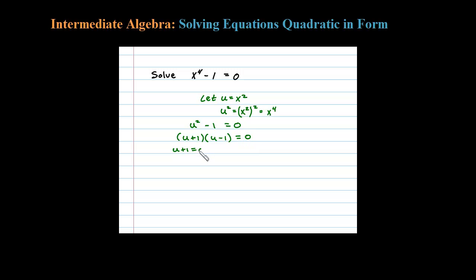Then set each factor equal to 0, and you can get solutions here - two solutions for u. But the solutions for u, that's not what we're looking for, so we have to back substitute. Here, u was equal to x squared from our substitution, so x squared equals negative 1, and again here x squared equals 1.